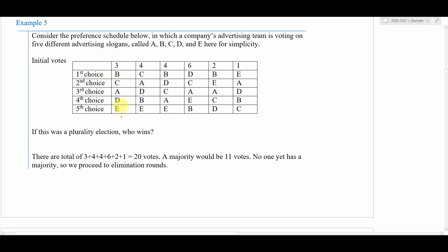If we were to run a plurality election here, we would tally up the number of first place votes. So we've got slogan A, B, C, D, and E, and we would go through and count up the number of first place votes for each of the slogans. For instance, A has zero, B is going to have nine, C would have four, D would have six, and E would have one, which means B would win plurality.